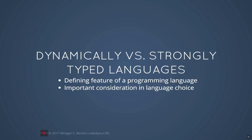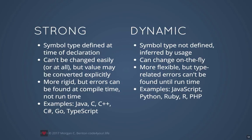Before looking at code examples, I want to talk about dynamically versus strongly typed languages. This is a defining feature of a programming language and an important consideration when choosing what language to use. In a strongly or statically typed language, the variable type is defined when you declare your variable and can't be changed easily. Strongly typed languages are more rigid, but errors can be found at compile time instead of runtime, which can save hours and days of debugging and make programs more memory-efficient, though they do require a bit more upfront work.